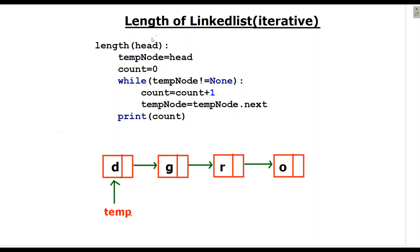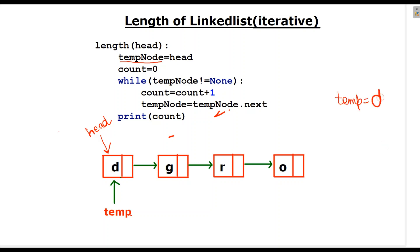Now we will calculate the length of the linked list iteratively. The head of the linked list is pointing towards the first node which is D. Here we have assigned a temporary node for head, so the temporary node is pointing towards head, which means temp node is pointing towards D now. And then we will initialize count as 0.